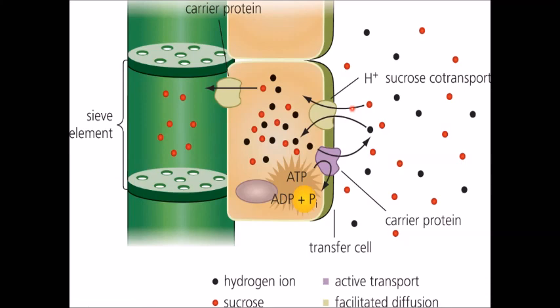From here we now have a high concentration within the companion cell so they can move via facilitated diffusion and the carrier protein there into the sieve element, into the phloem. This in turn changes the water potential here, the water becomes less pure.